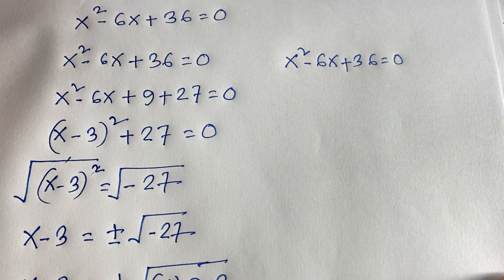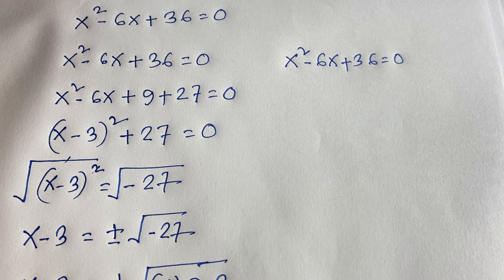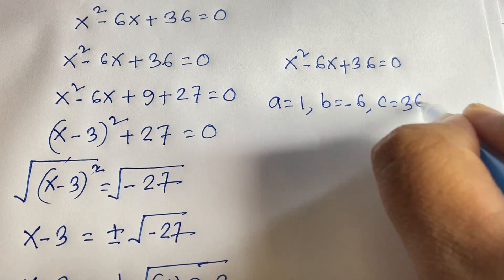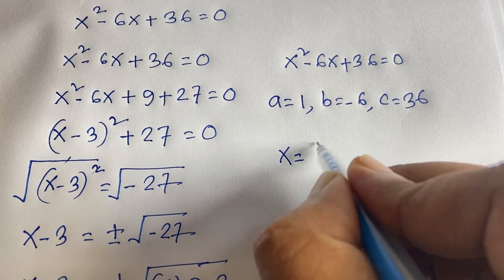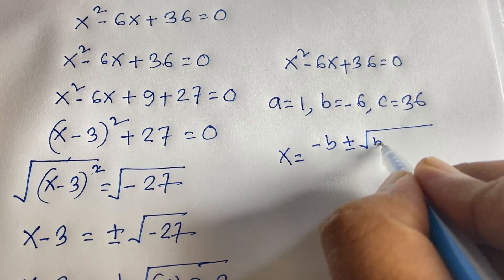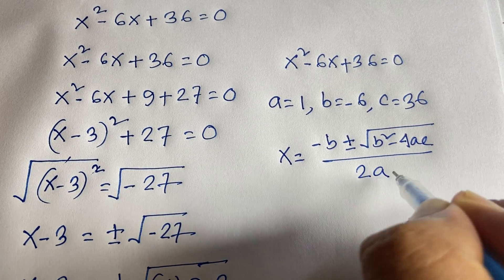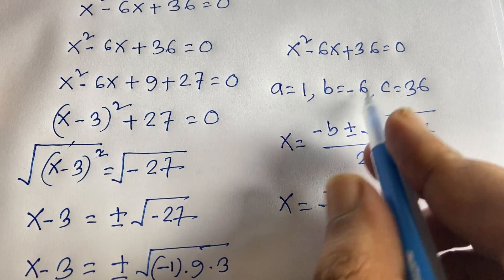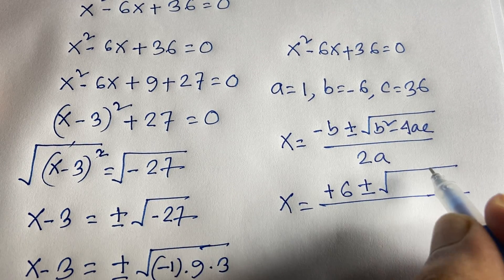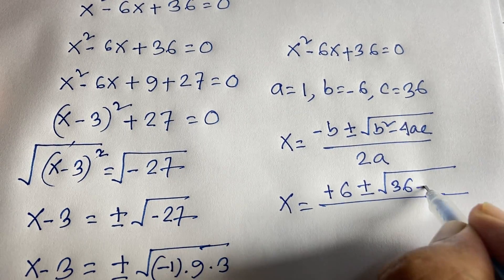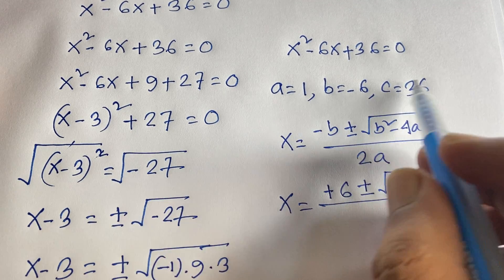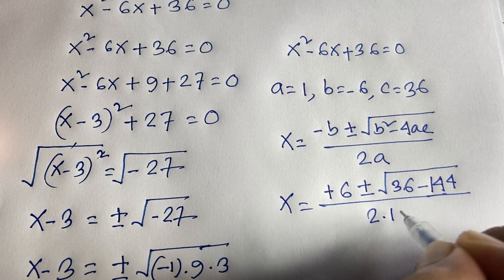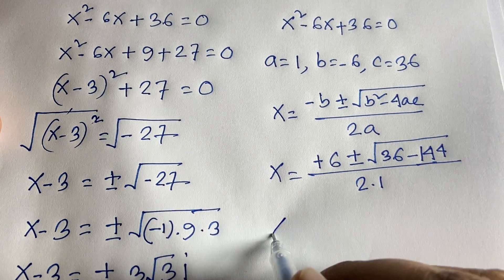Now for the second method, using the quadratic formula. Here a equals 1, b equals minus 6, and c equals 36. So x equals minus b plus or minus square root of (b squared minus 4ac), all over 2a. Substituting: x equals positive 6 plus or minus square root of (36 minus 4 times 1 times 36), all over 2.